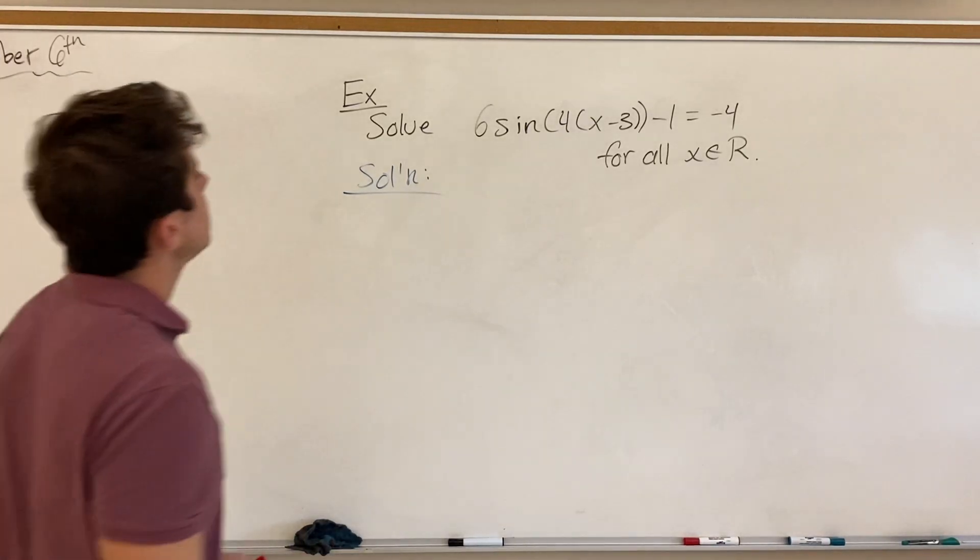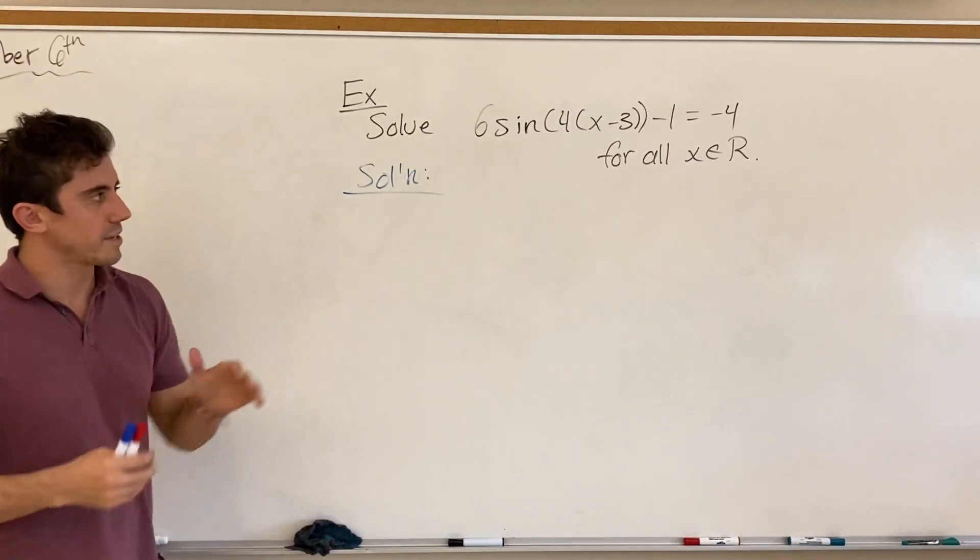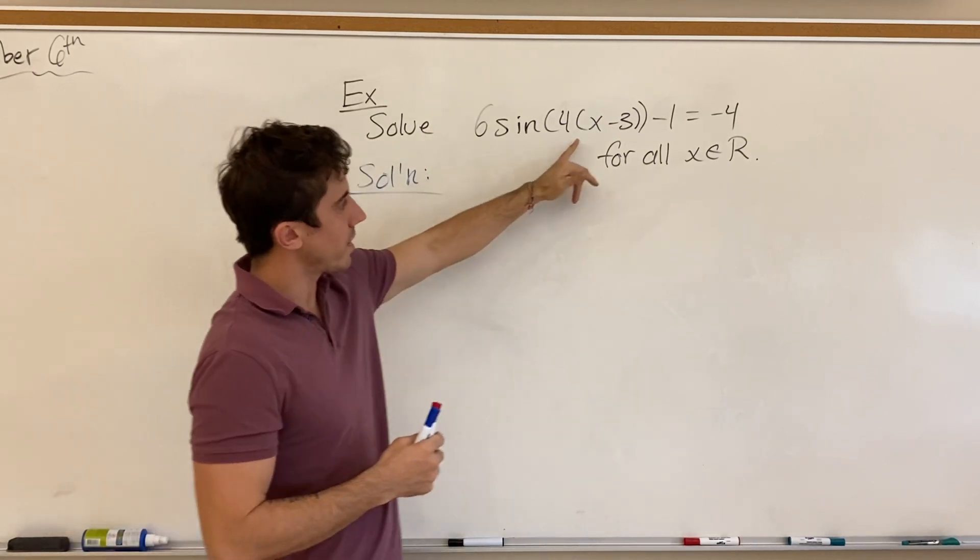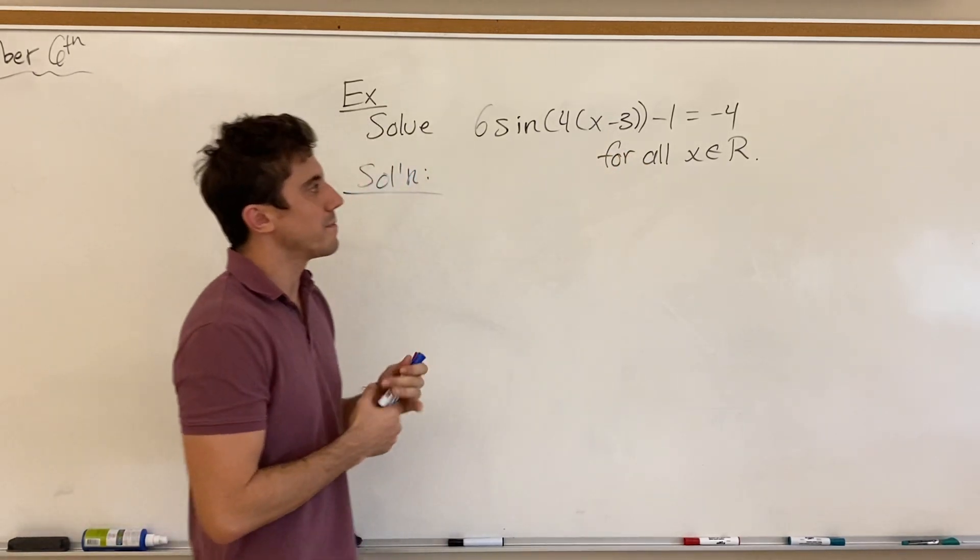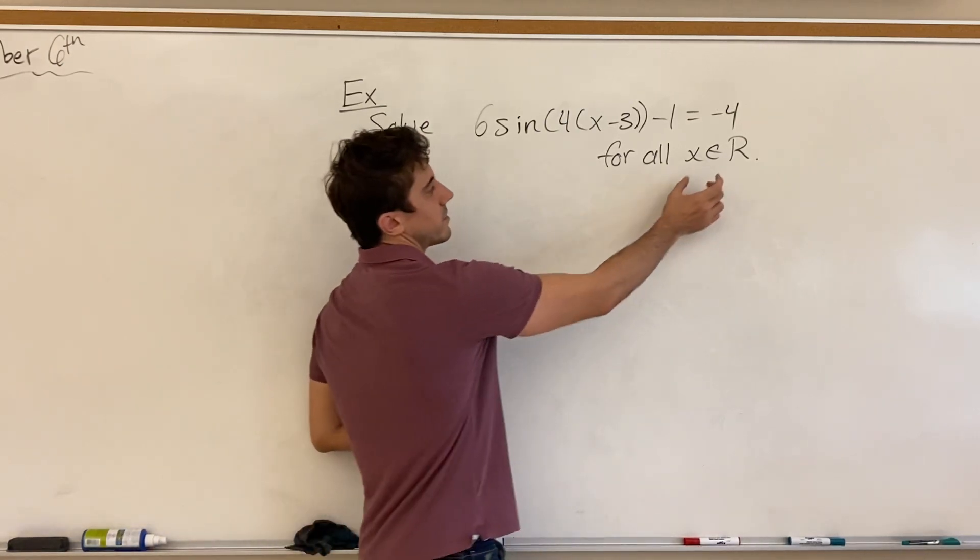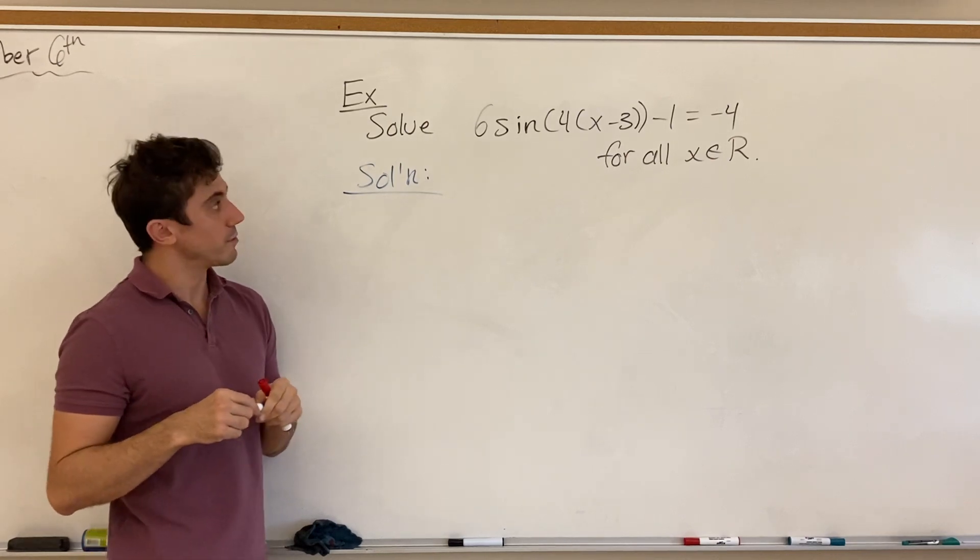Good afternoon, everyone. So here we're going to do an example where we solve a more complicated trig equation, something like 6 sine of brackets 4, bracket x minus 3, all that minus 1 is equal to negative 4, and we're going to solve for all general solutions for any x that is a real number.